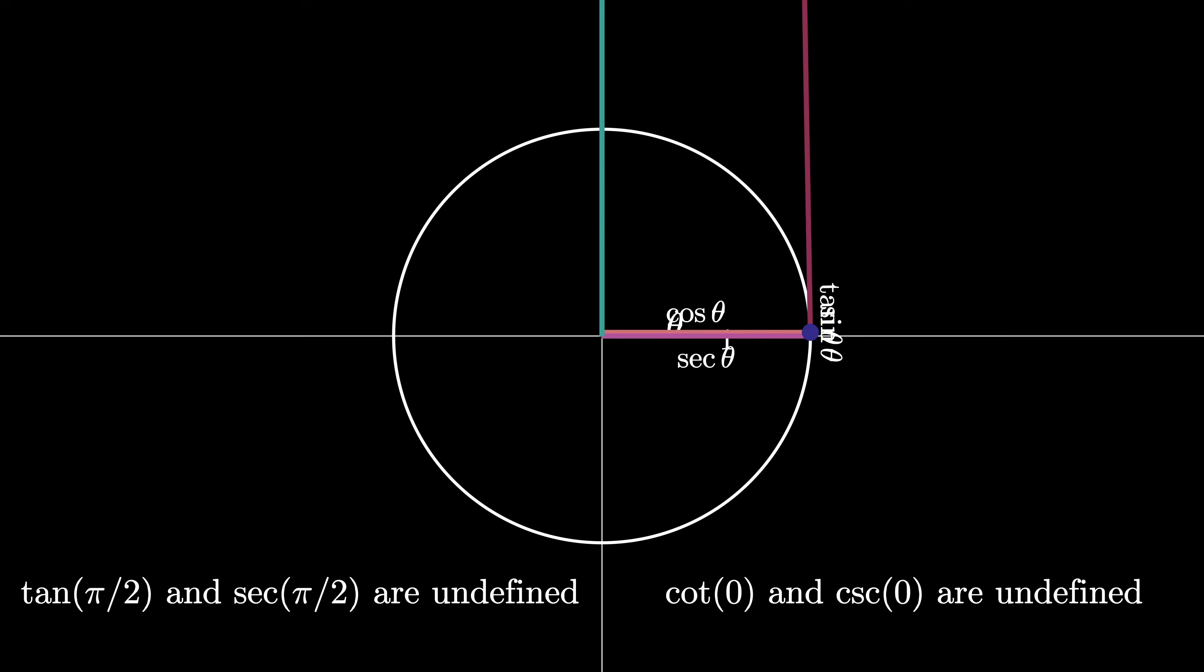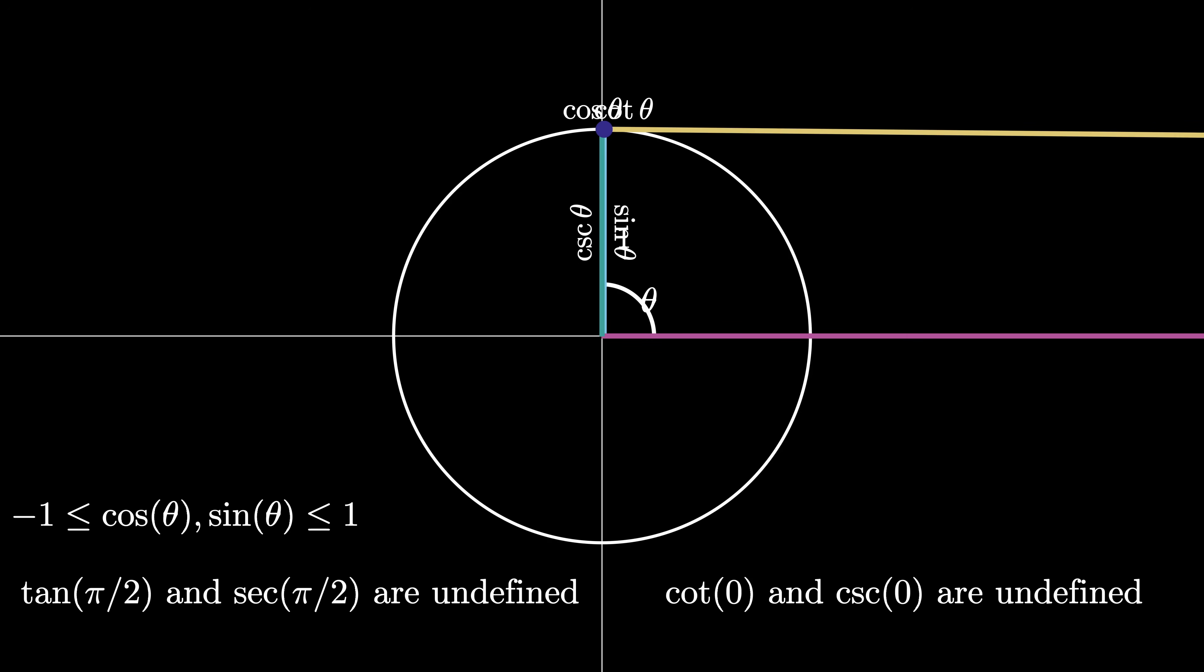We can get even more information from this diagram as we let theta vary. We see in particular that the sine function and the cosine function outputs must be between negative 1 and 1, as those lengths can't extend outside the unit circle, which has a radius of 1. And likewise, we see that the cosecant and the secant have absolute values that are greater than or equal to 1. And finally, we see that the tangent and the cotangent can take on any value between negative infinity and infinity as we rotate around the circle.